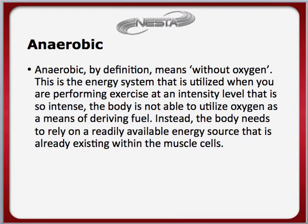So let's begin our first discussion with some information about the two energy systems available. The first one is the anaerobic system. By definition, anaerobic means without oxygen. This is the energy system that is utilized when you're performing exercise at an intensity level so intense that the body is not able to utilize oxygen as a means of deriving fuel. Instead, the body needs to rely on the readily available energy source that is already existing within the muscle cells. When you think of anaerobic training, think of insanely high intensity training — training done at such an exertion level that you can't sustain it for any length of time. Anaerobic training encompasses interval training, interval sprints, intense weight lifting, or stop-and-go type sports that require you to put forth maximum effort to make a play.